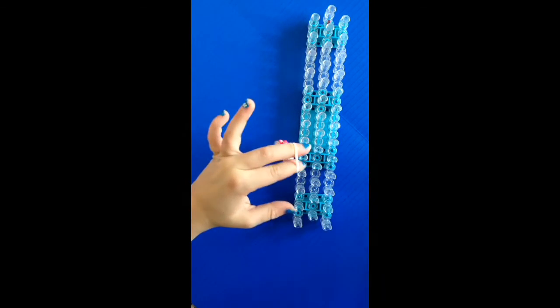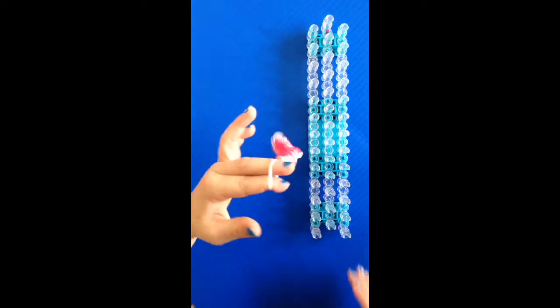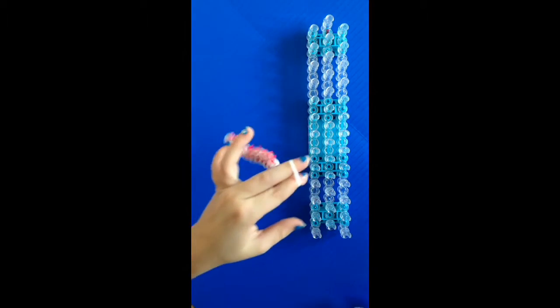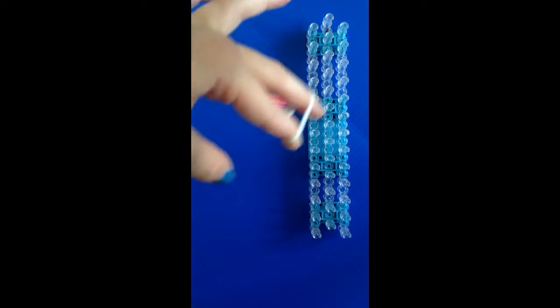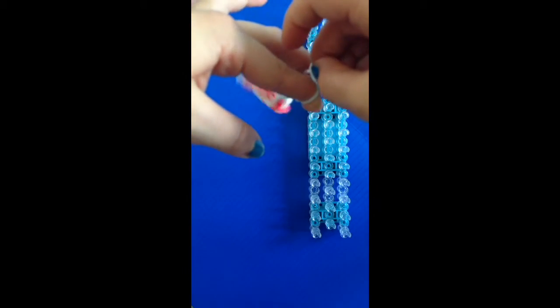So it should look like this. And then just put this on your fingers. Put this on your fingers like that and grab a clip. It's okay if it's an oval clip or an S clip. And put it onto these two.